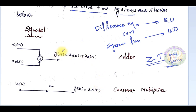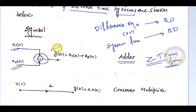We need some standard structures for block diagram representation. The first is an adder. Suppose you have two inputs x1(n) and x2(n) — both signals will be added using the adder, and the output y(n) is the sum of x1(n) and x2(n). Another important component is a multiplier, otherwise called an amplifier.